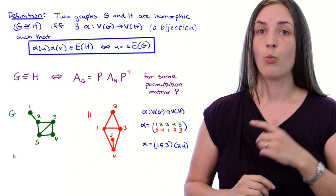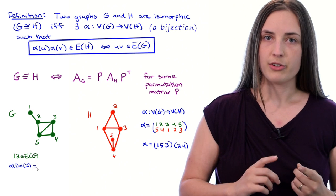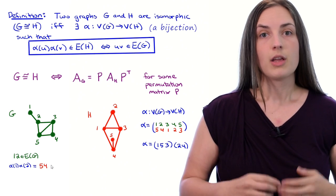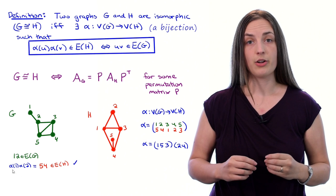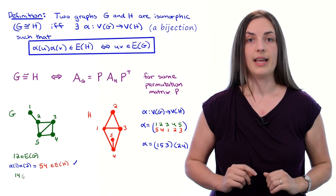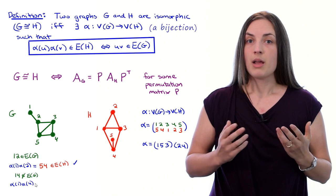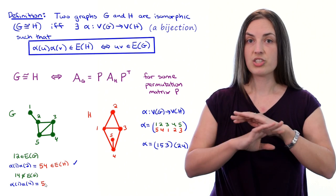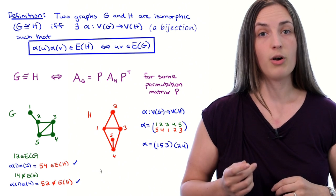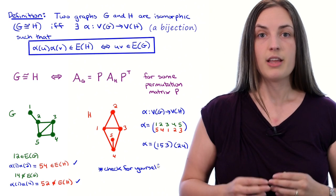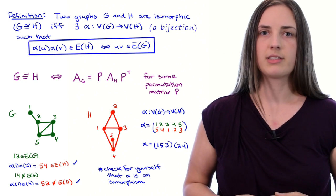To demonstrate this, I'll just go through two little examples. We notice that 1-2 is an edge in graph g. So α(1)α(2) ends up being 5-4, which is an edge in graph h. That worked. Next we notice that 1-4 is not an edge in graph g, and α(1)α(4) maps to 5-2, which is not an edge in graph h. So those two examples worked out. If you want, you can check for yourself that α is indeed an isomorphism, but hopefully at this point you're pretty convinced that it will work.